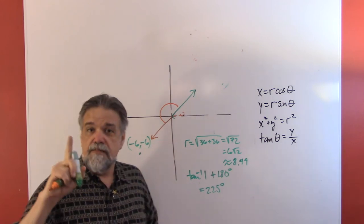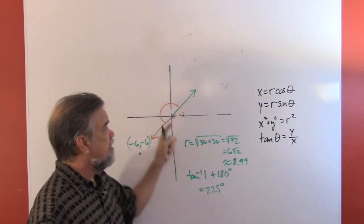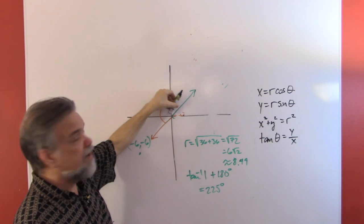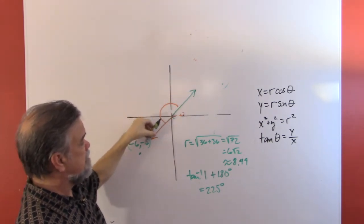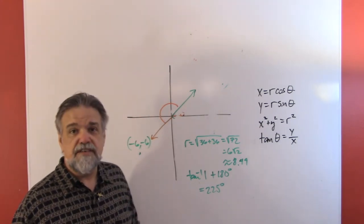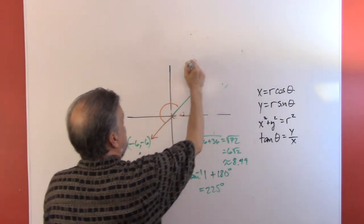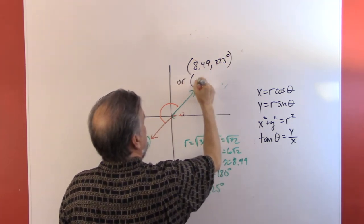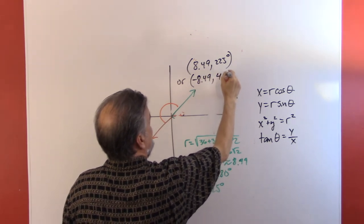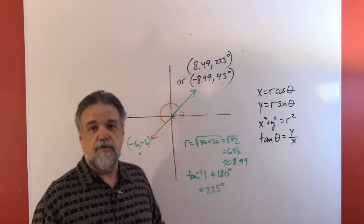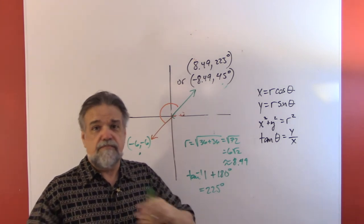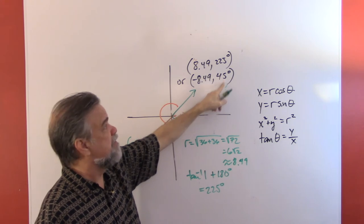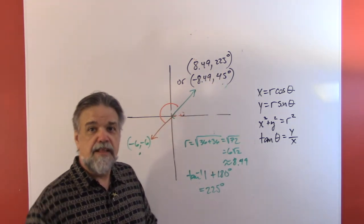There are two adjustments you can make. First, you can take the inverse tangent of 1 plus 180°, giving 225°, so the point is (8.49, 225°). Alternatively, you can leave theta as 45° but make r negative — going 8.49 units in the opposite direction — giving (-8.49, 45°). Both answers are perfectly correct. There are also infinitely many other valid representations using coterminal angles.